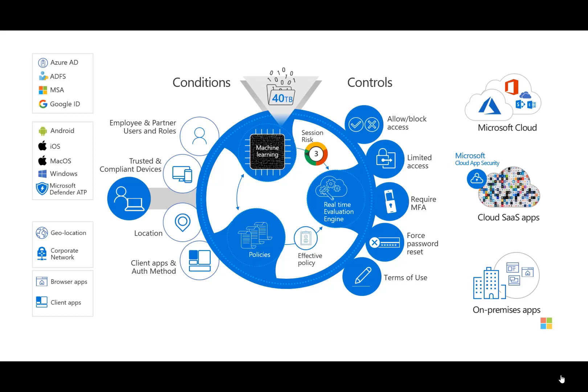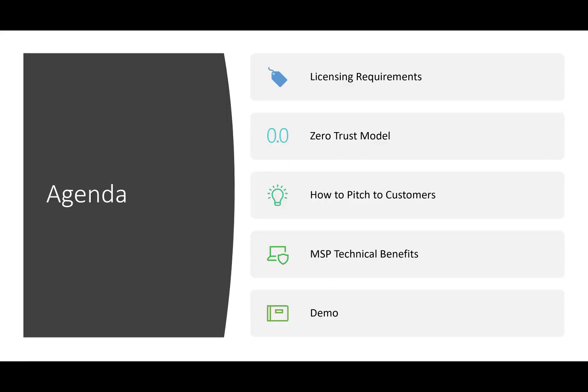Today's agenda: I'm going to be going over the licensing requirements for conditional access, the shifting landscape to the zero trust model, how we can pitch this to our customers when we want to potentially upgrade them from Office 365 Business Premium to Microsoft 365 Business. I'll cover the technical benefits from an engineering standpoint of controlling access to applications without disrupting end users, and then a demo of the policy creation within the Microsoft Admin Center.